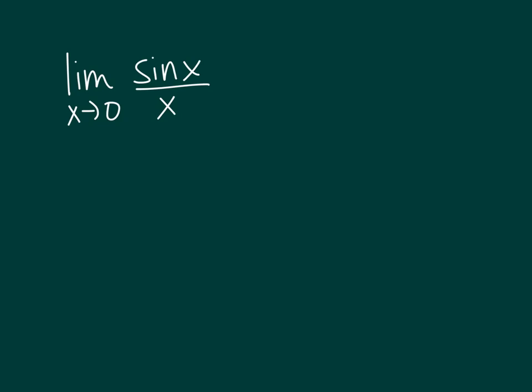So first, we're going to do our first strategy if we're trying to evaluate limits, which is see if we can do direct substitution. But you notice we get an indeterminate form if we try to put in 0 here for x. So this means we're going to need some other strategy to examine what's happening as x approaches 0.